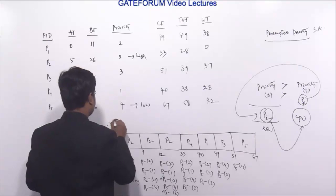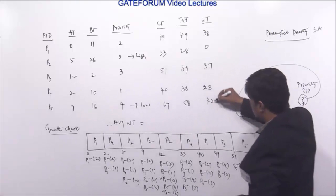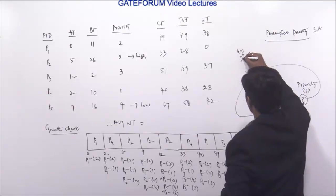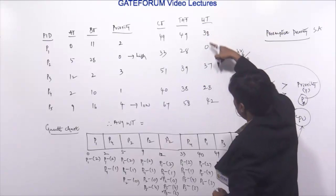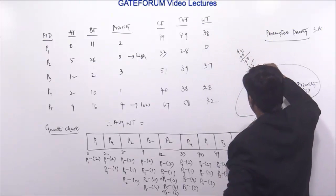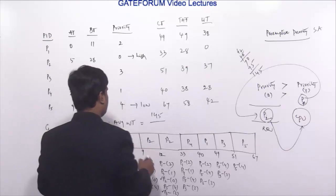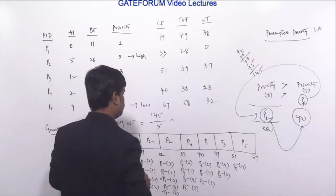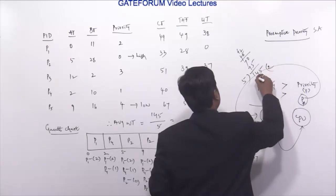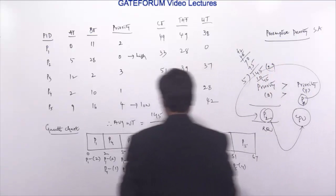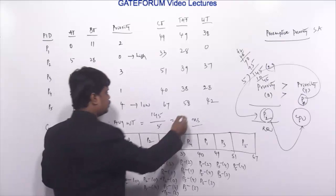Average waiting time = (38 + 0 + 37 + 28 + 42) / 5 = 145 / 5 = 29 milliseconds. The answer for this question is 29.